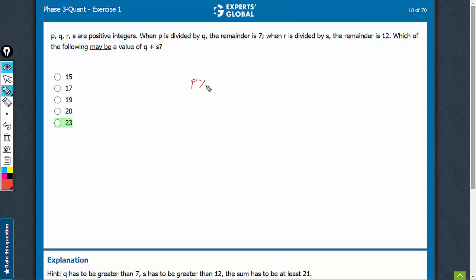The remainder of p with q is equal to 7. The remainder of r with s is equal to 12. The question is asking for the value of q plus s.